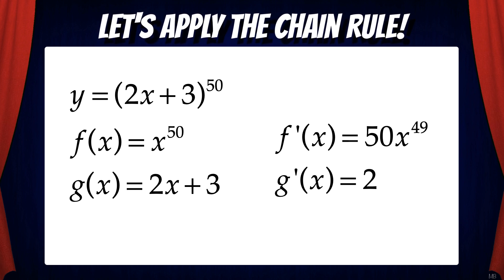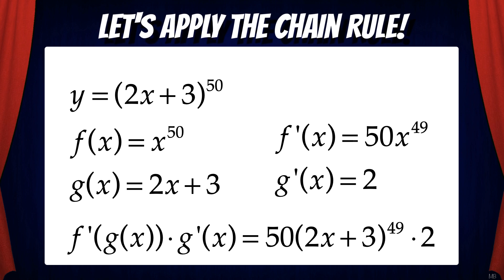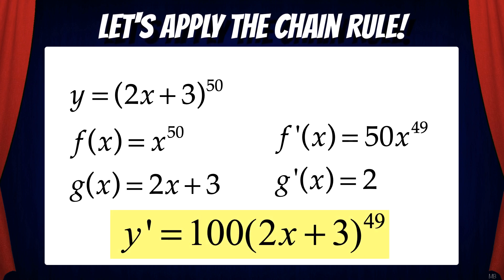Now we can apply the chain rule to find the derivative of the composition. The chain rule is f'(g(x)) times g'(x). In this case that gives us 50 times 2x plus 3 to the 49th power times 2. Then we multiply 50 times 2 to get our final answer: y prime equals 100 times the quantity of 2x plus 3 to the 49th power.